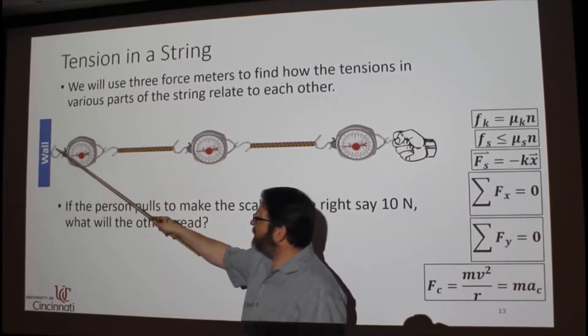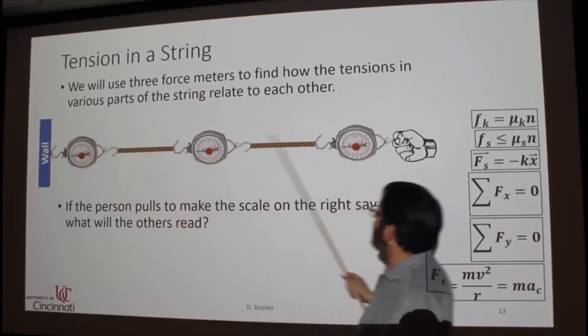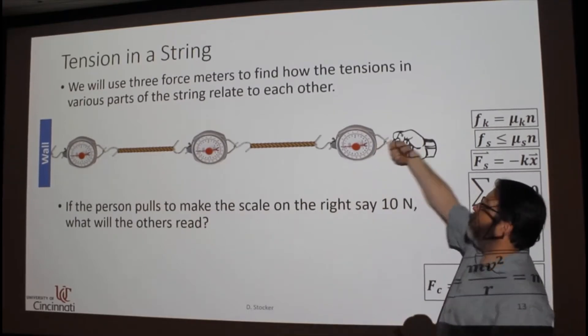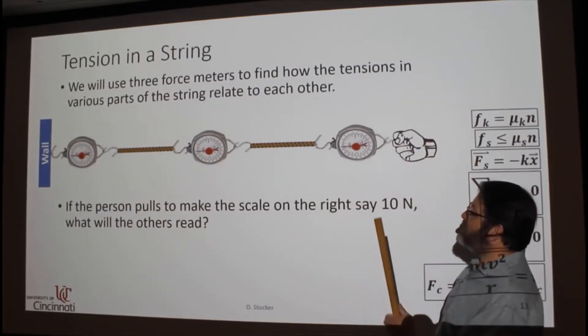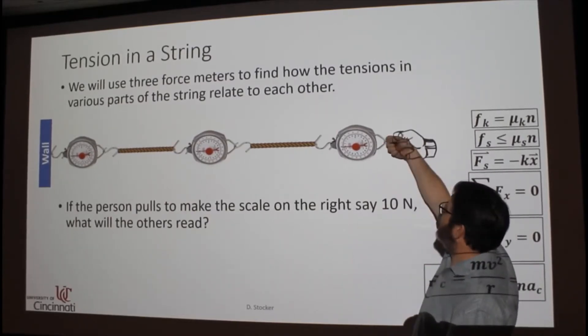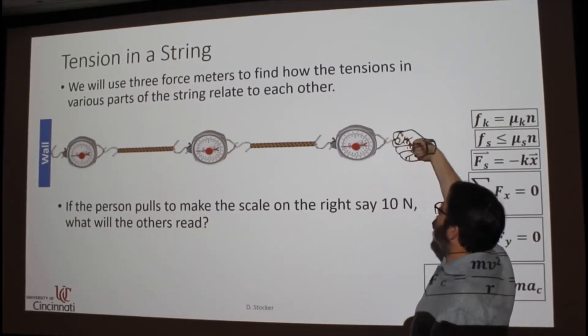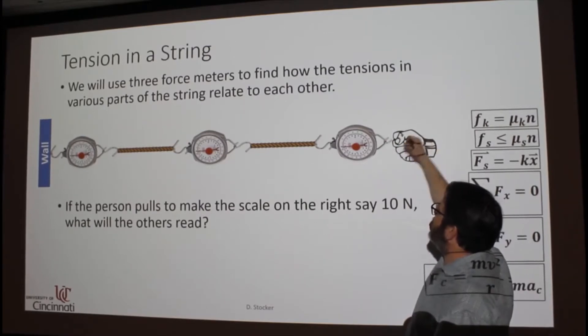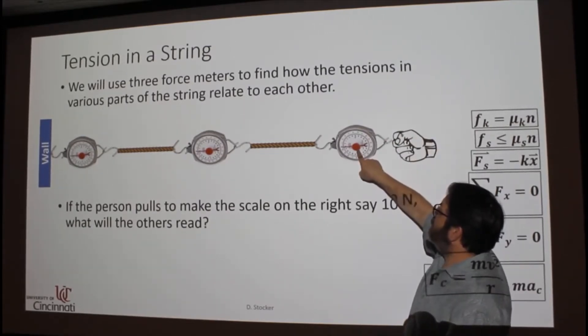In this case, I've got something hooked to a wall on this side, and then something pulling over here. So the question is, in this case it says 10 newtons. I'll just see wherever it ends up with the spring. You pull with the spring on one side, and you read what's here.